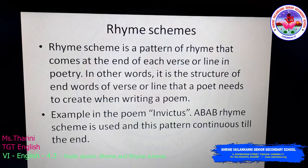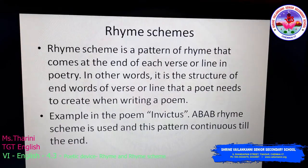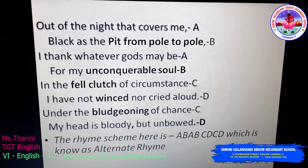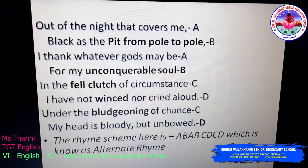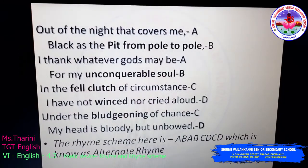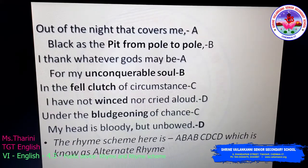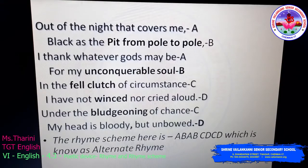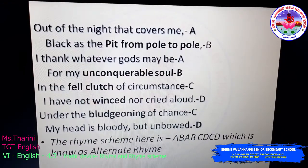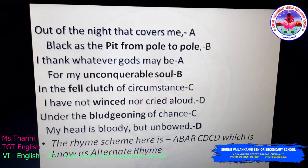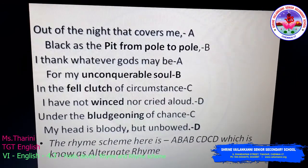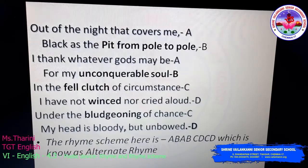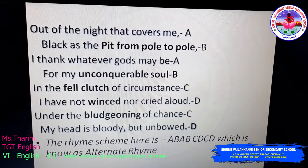In the poem Invictus, an ABAB rhyme scheme is used and this pattern continues till the end. 'Out of the night that covers me' — the line ends with 'me', so I will mark it as A. Next: 'Black as the pit from pole to pole' — 'me' and 'pole' are not rhyming words, so I mark it as B. Next: 'I thank whatever gods may be' — 'me' and 'be' is a half or para rhyming word, so I mark it as A.